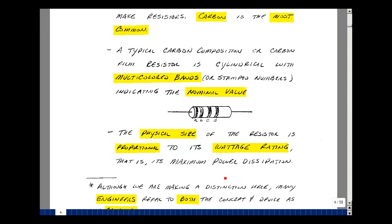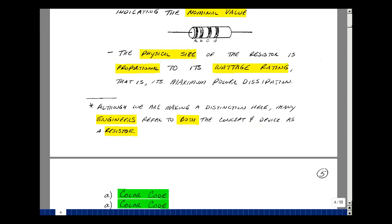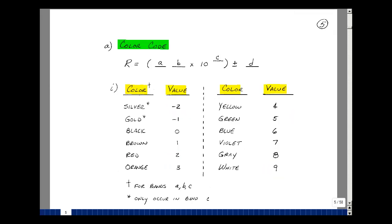The physical size of the resistor is proportional to its wattage rating. That is the maximum power it can dissipate. The color code is a way to calculate the typical or nominal value of a resistor based on the colored bands painted on it.